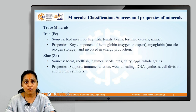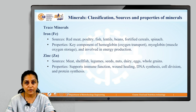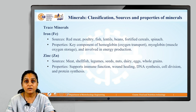Now let us move on to the second type of minerals: trace minerals. Let us begin with iron. Sources of iron (Fe) are red meat, poultry, fish, lentils, beans, fortified cereals and spinach. Properties of iron: it is a key component of hemoglobin involved in oxygen transport, myoglobin in muscle oxygen storage, and energy production.